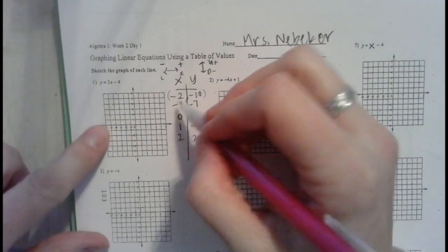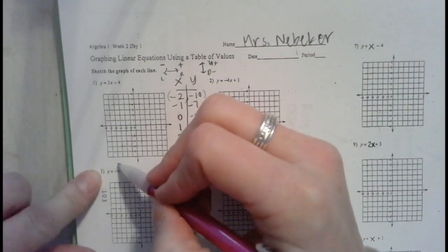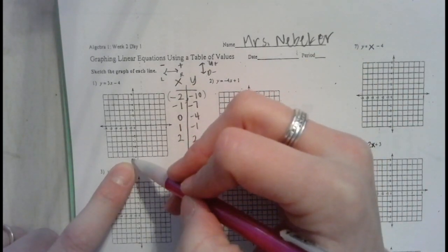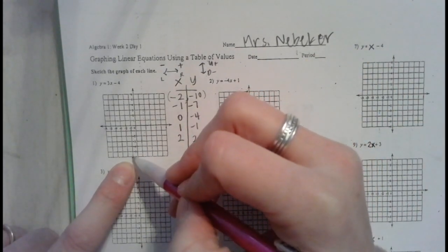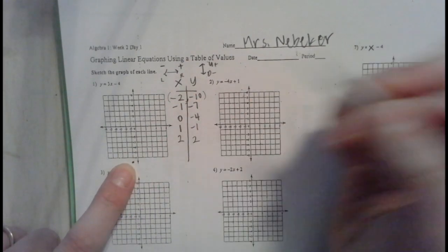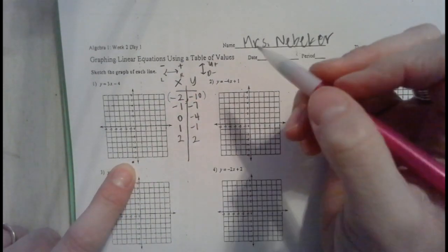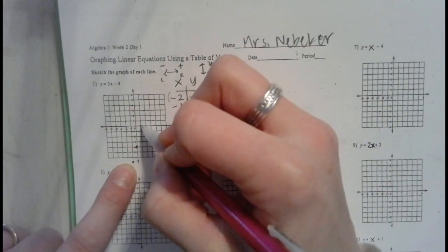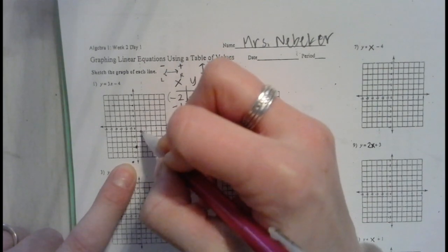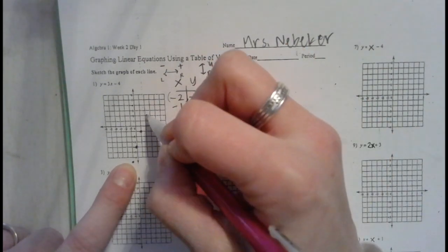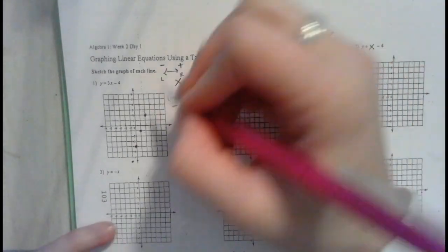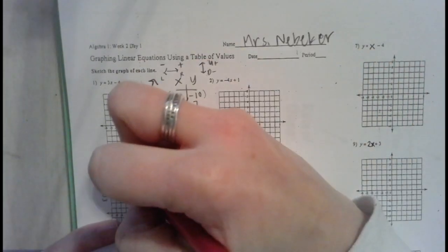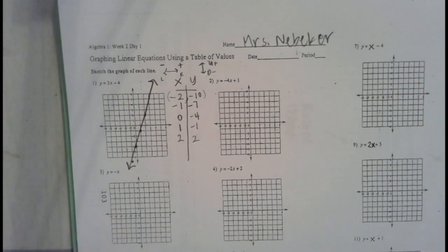Negative 1, negative 7 is very close to the edge. Then 0, negative 4; 1, negative 1 — go 1 right and 1 down; and 2, 2 — up here. Now we connect all the dots with a nice straight line that goes all the way from one edge of the grid to the other, with arrows at the ends. That is how you graph using a table of values.